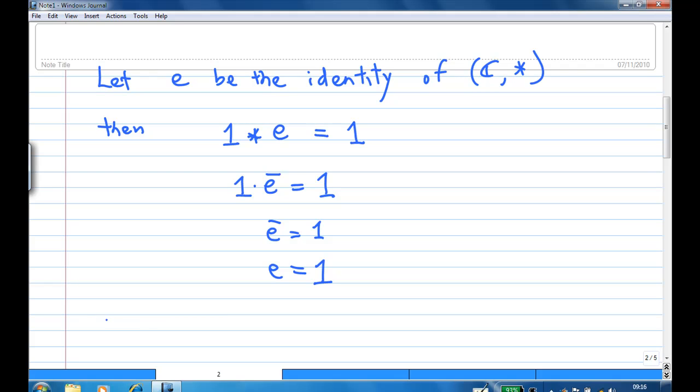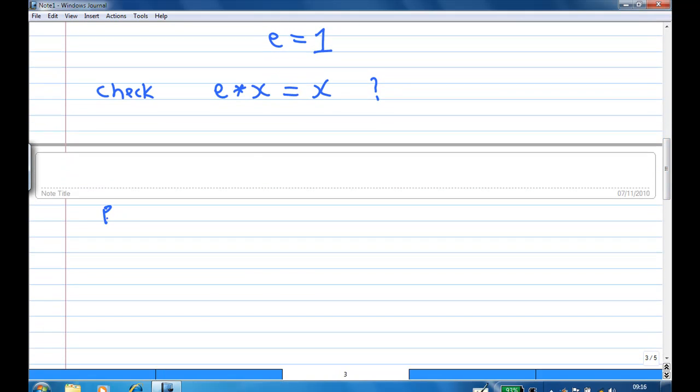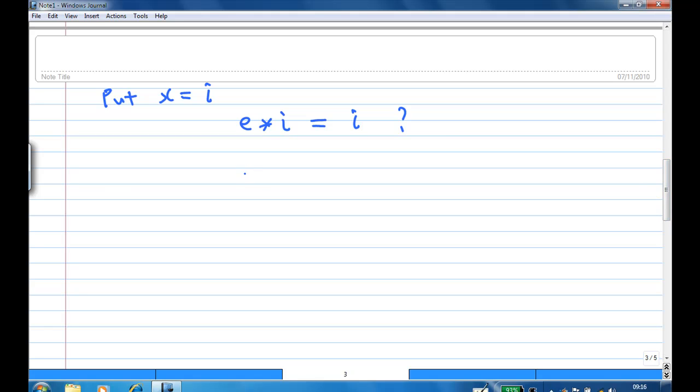Now, does it work on the right hand side? That means, now check whether e star x equal to x. Because if e is identity, e star x must be equal to x. So for example, if I put x equal to i, then does it mean that e star i is equal to i? Remember, e star i means e times i conjugate. So, 1 conjugate of i is minus i. This is equal to i. So we know that this is obviously not true.